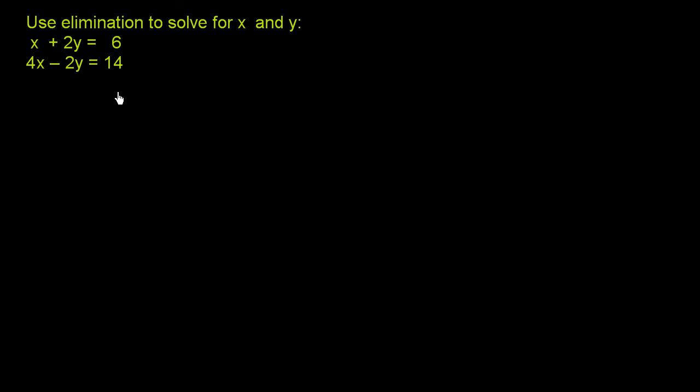So to solve by elimination, what we do is we're going to add these two equations together so that one of the two variables essentially gets eliminated, gets canceled out. And what we could do right here, we see we have a plus 2y here, and we see we have a negative 2y right over here. So clearly, if we added these two together, the y's would cancel out. So that's exactly what we're going to do.